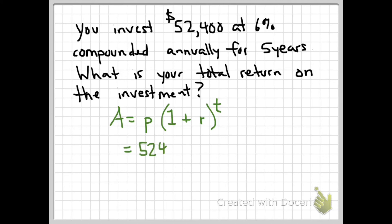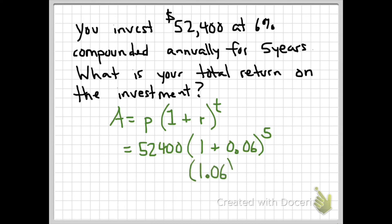Looking at our problem, the principal is $52,400. We do 1 plus the rate of six percent, which we convert to 0.06, and this is over the course of five years — slightly different from simple interest. Working within the parentheses first: 1 plus 0.06 equals 1.06. Then we apply the exponent before multiplying by the principal, so we raise 1.06 to the fifth power.